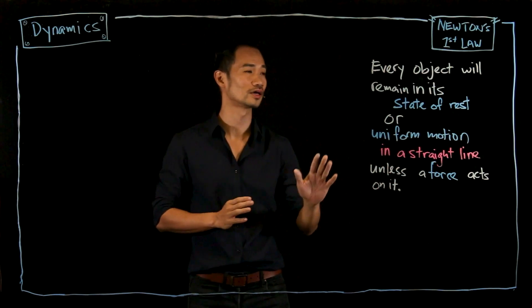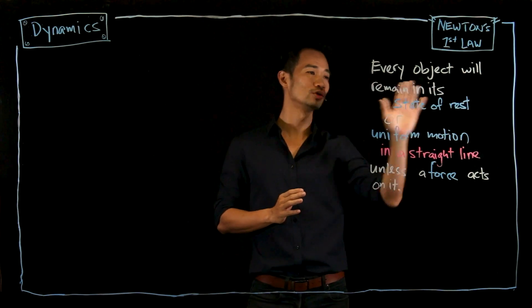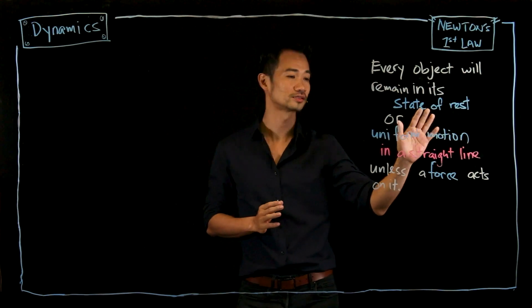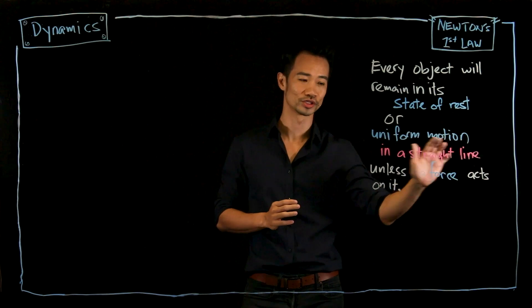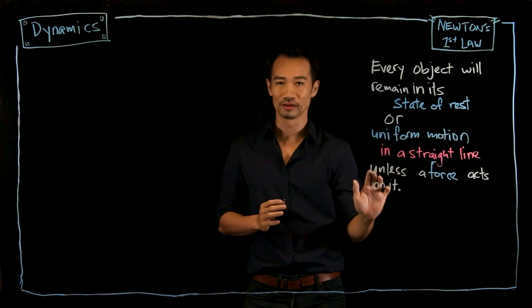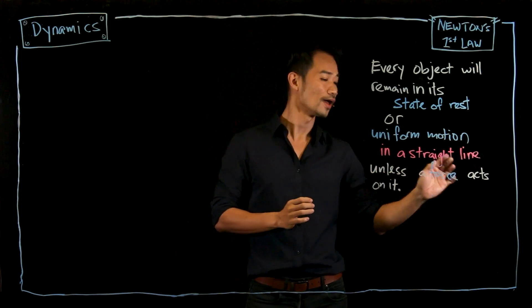So what does the law say? The law says that every object will remain in its state of rest or uniform motion in a straight line unless a force acts on it.